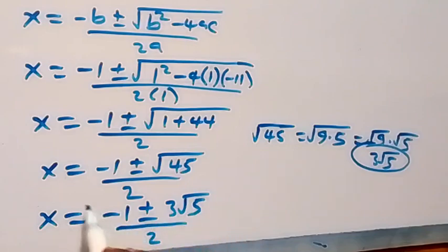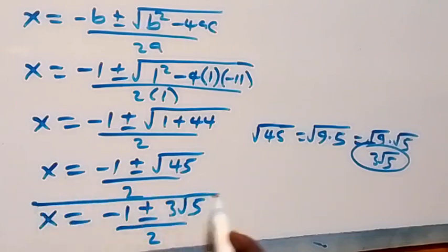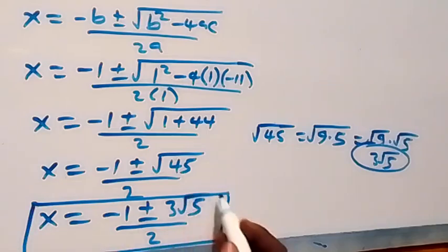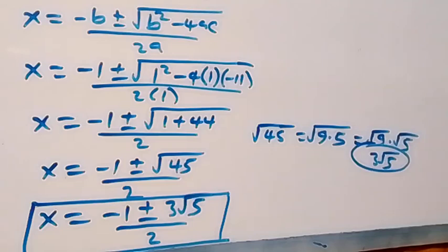So here we have two solutions. The first one is x equals to minus 1 plus 3 root 5, over 2, and the second is x equals to minus 1 minus 3 root 5, over 2.